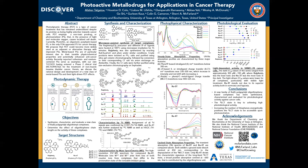All the proton signals for our compounds were assigned and confirmed by 2D NMR techniques, such as COSY, HSQC, and HMBC. For mass spectrometry, we can see two unique peaks: one is a protonated adduct and one is deprotonated.